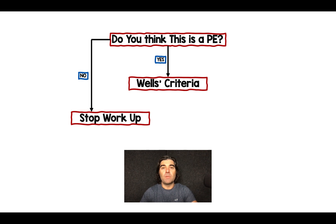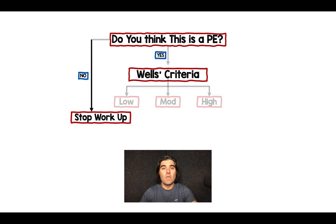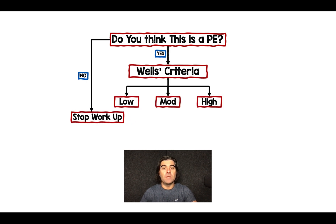If you truly think your patient has a PE, then we need to objectively risk stratify that patient. I personally like to use the three-tier Well Score and put my patients into a low, moderate, or high-risk category.